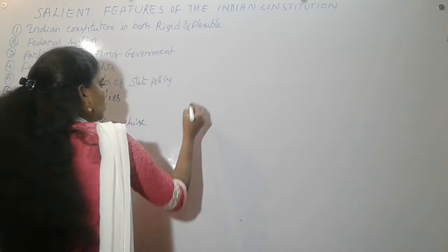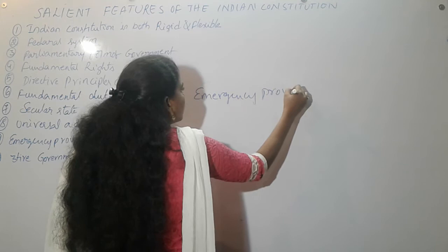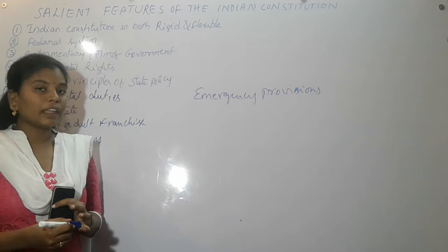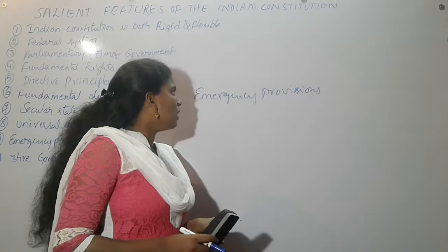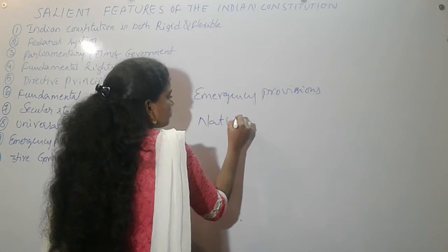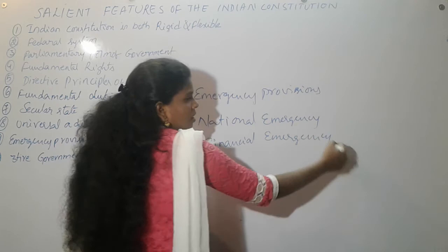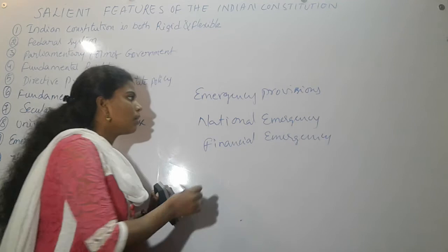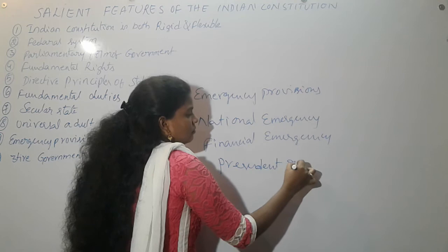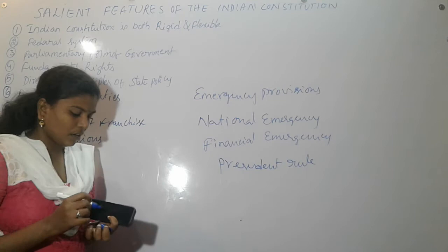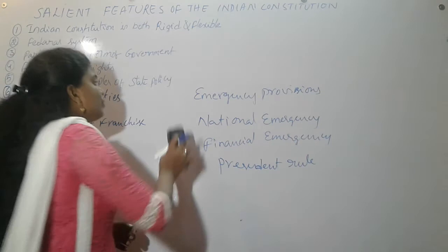The Constitution also has emergency provisions. There are three types of emergencies: national emergency, financial emergency, and state emergency or President's Rule. During all these emergencies, India behaves like a unitary form of government.